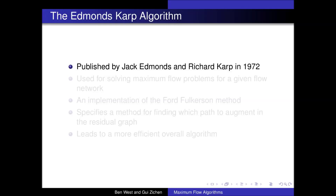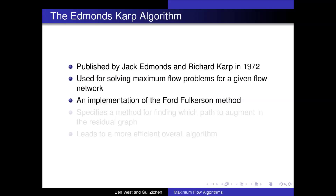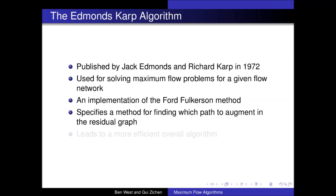Let's look at a brief overview of the algorithm and its history. The Edmonds-Karp algorithm was first published in 1970 by Yefim Dinich, although it was independently published by Jack Edmonds and Richard Karp in 1972, leading to the Edmonds-Karp name. The algorithm is an implementation of the Ford-Fulkerson algorithm, with the main difference being that we follow a set of rules to decide which augmenting path to use next. This leads to a more efficient overall algorithm, as we'll see later in the video.